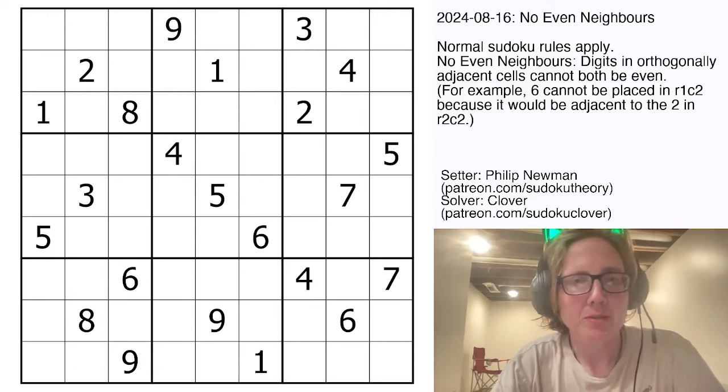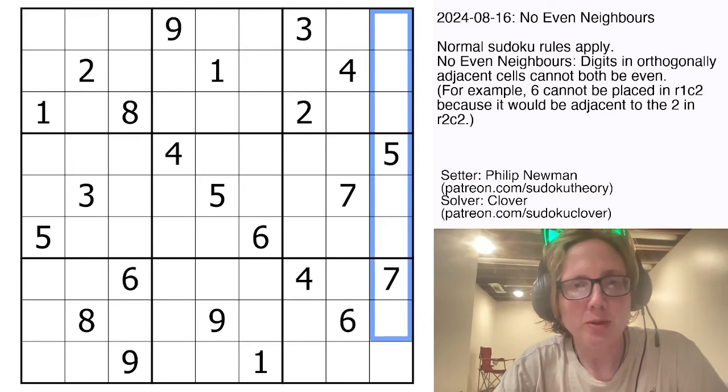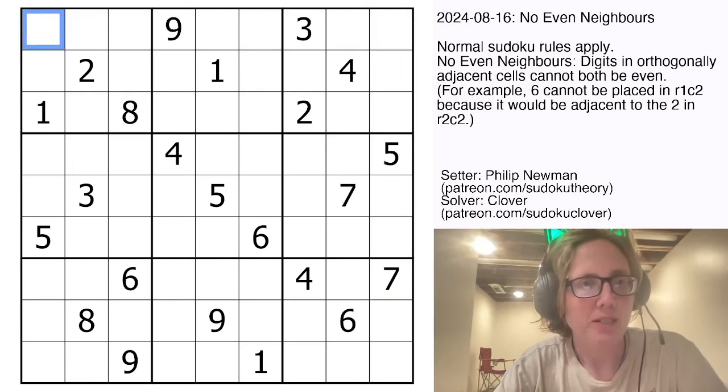So we have normal Sudoku rules today, so we're placing the digits 1 through 9, once each in each row, each column, and each outlined 3x3 region.